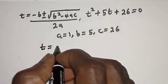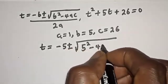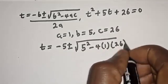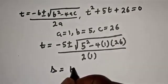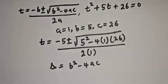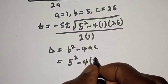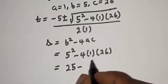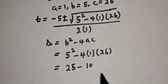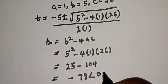We have t equals negative 5 plus or minus square root of 5² minus 4 times 1 times 26, over 2 times 1. The discriminant equals b² minus 4ac, which is 5² minus 4 times 1 times 26, equal to 25 minus 104, equal to negative 79. Since the discriminant is less than zero, this case is rejected.